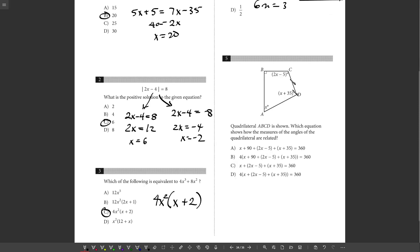Five, what's true about the four angles of a quadrilateral? When you add them, they add up to 360. So x plus 90 plus 2x minus 5 plus x plus 35, that should all add up to 360, so that's choice A.